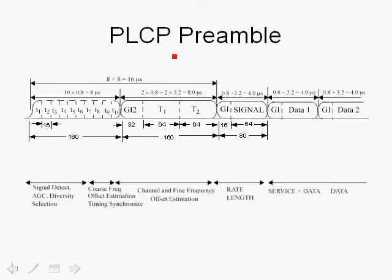The PLCP preamble is shown here. The physical layer transmits the PLCP preamble, then the signal field, and then the OFDM symbols containing the data supplied by the MAC.